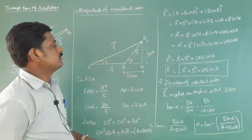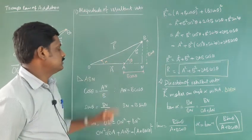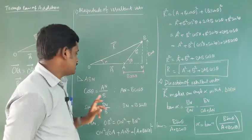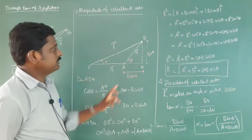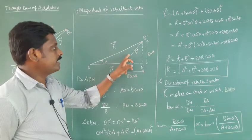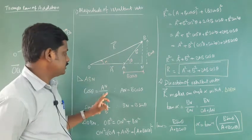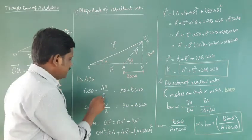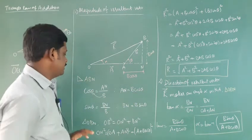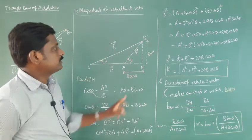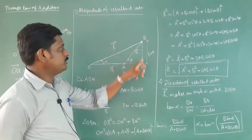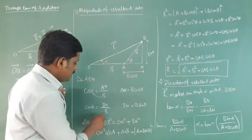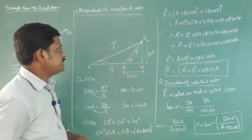In the right-angle triangle ABN, the angle theta is formed. cos theta equals adjacent over hypotenuse, which gives AN over B, so AN equals B cos theta. Similarly, sin theta equals opposite over hypotenuse, which gives BN over B, so BN equals B sin theta.